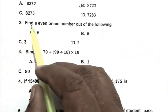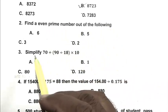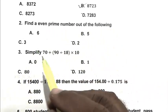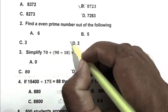Question number 2: Find an even prime number out of the following. We know that the only even prime number is 2. So D is the right answer.